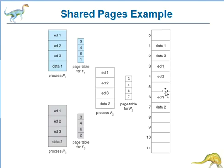Only for process P1, different data is coming in frame 1, that is data 1. For process P2, in seventh frame we are getting data 2. For process 3, the data for process 3, data 3, is available in frame 2. This is the shared pages example.